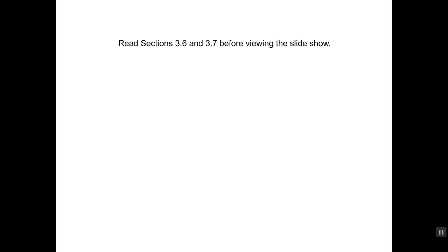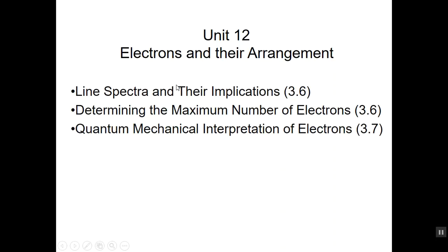Welcome to the PowerPoint show regarding electrons, unit 12. The sections to look at in your textbook are 3.6 and 3.7. We're going to take a look at line spectra and what their implications are, determining the maximum number of electrons in a particular atom, how those things are arranged, and also what's called a quantum mechanical interpretation of those electrons.